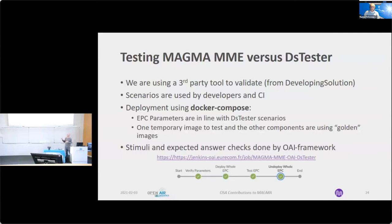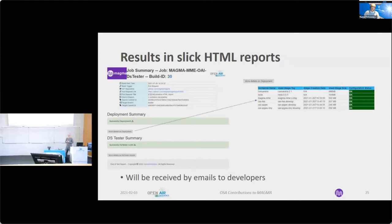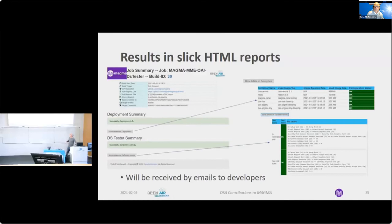In addition to your GitHub notification, you will receive by email a slick HTML report with a summary of the run. For example, you have the name of your pull request, the name of the branch, the commit that has been tested, details on the image used for deployment — in this case, the Magma MME CI temp image for the PR from Magma — and also details on all the scenarios that have been run.